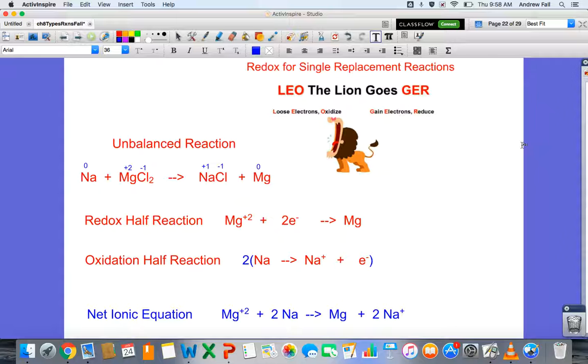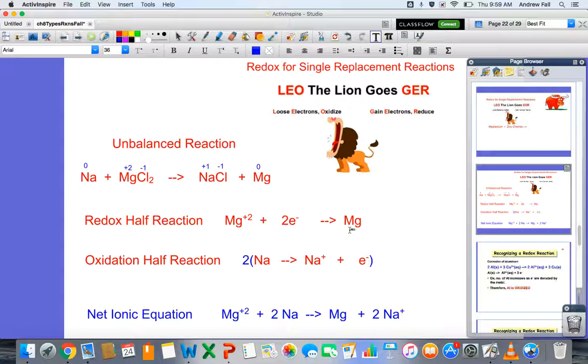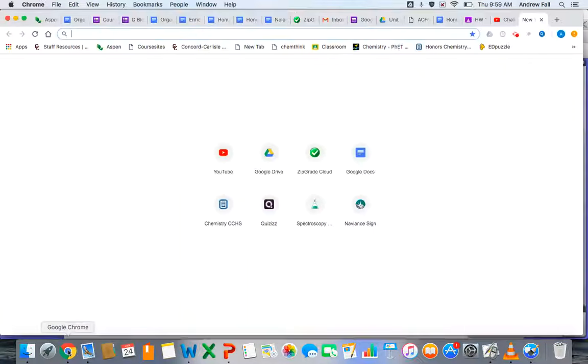You end up with the net ionic equation of Mg²⁺ plus 2 Na produces one magnesium and two sodium ions. That is how you write a net ionic equation for a redox reaction specific to single replacement reactions.